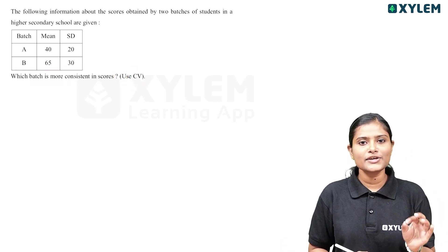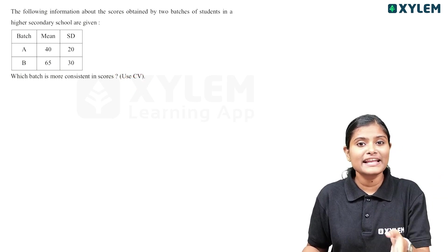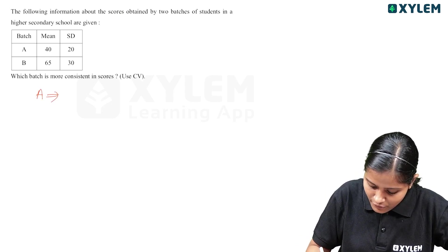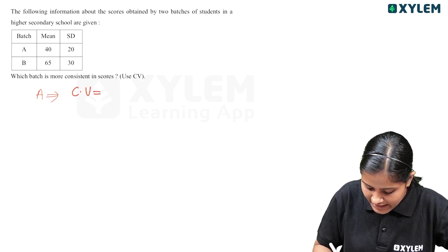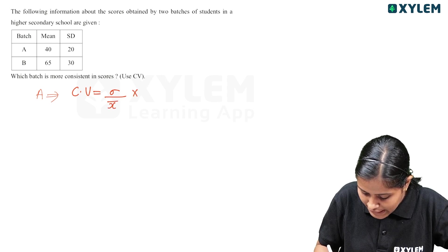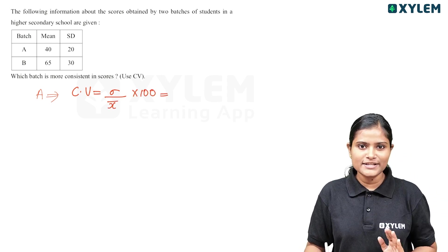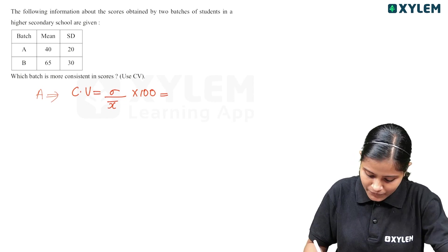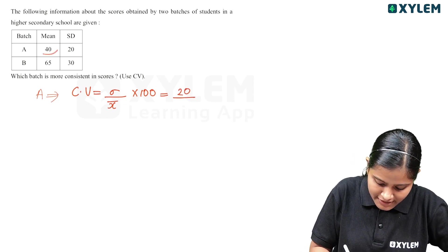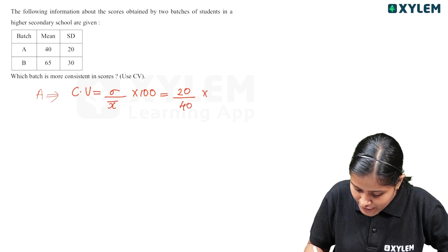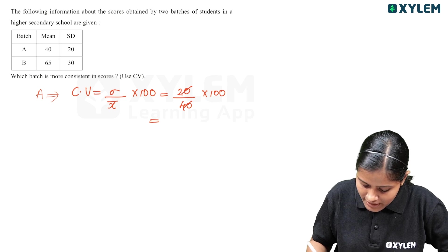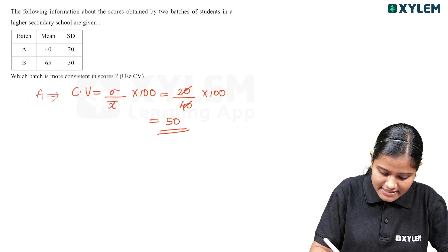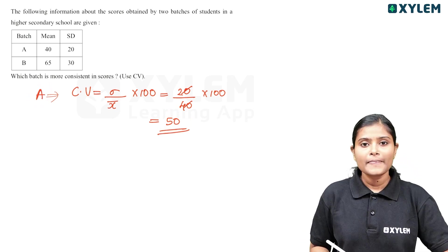We calculate the coefficient of variation for each batch. For Batch A, coefficient of variation is equal to standard deviation divided by mean into 100. Standard deviation of A is 20, mean is 40. So CV of A equals 20 divided by 40, into 100, which equals 50.